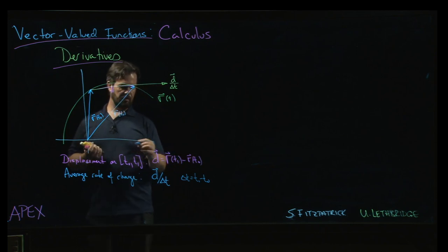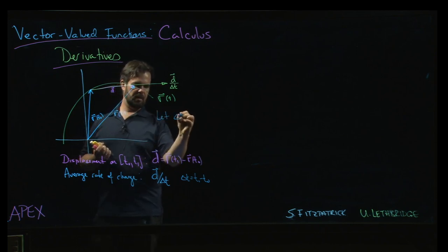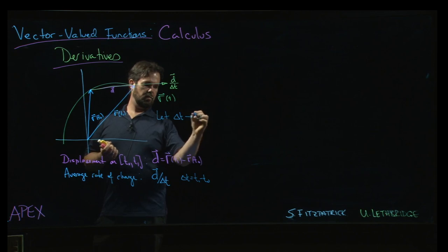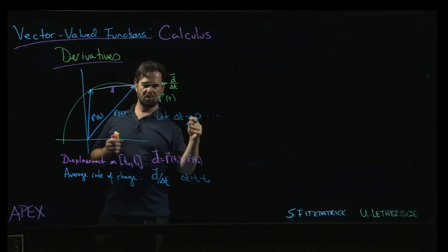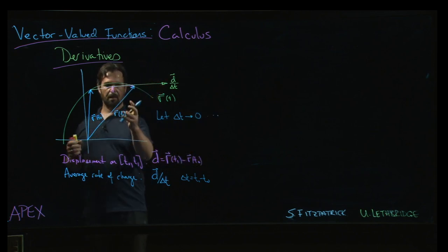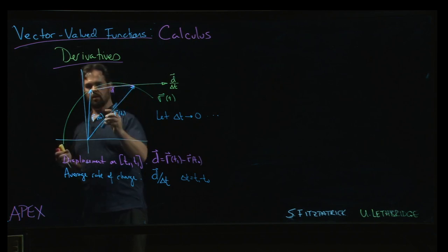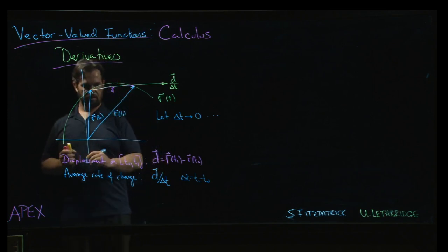But then what you can do is you can say, okay, well what happens if we let delta t go to zero, right? Usual kind of derivative story. What happens if we take this vector here and we slide it along the curve until we get closer? So if I'm say here for example, right, if I'm at some much closer point—